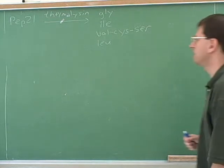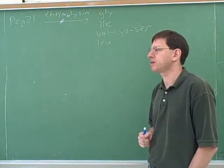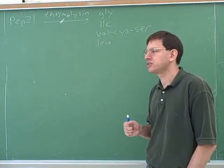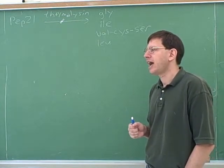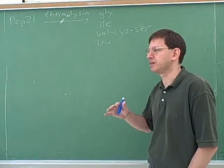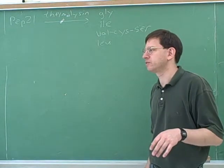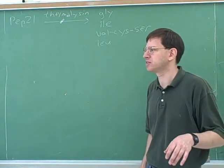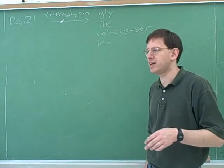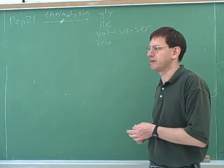So what have we talked about so far? We've talked about how to synthesize an amino acid, and we've talked about how to figure out the sequence of amino acids in a polypeptide. The next logical thing is: how do you synthesize a polypeptide? We've talked about making a single amino acid, but how do you put more than one amino acid together? It doesn't do you any good to know what insulin is made of unless you can actually put the amino acids together in the right order.